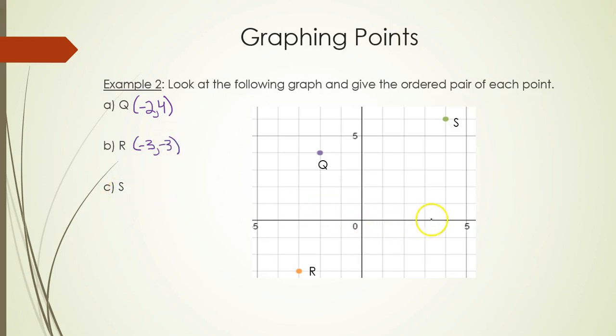Point S, you go right 4 and up 6. So (4, 6) is the ordered pair for point S.